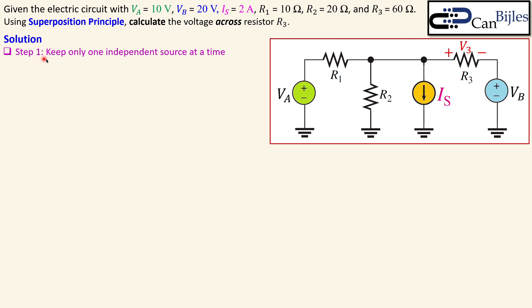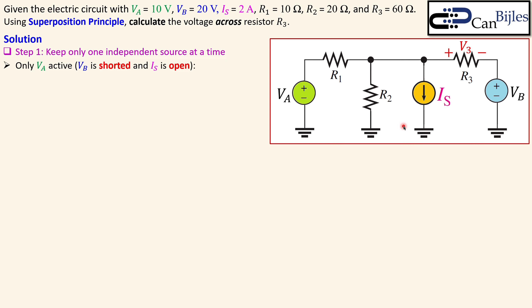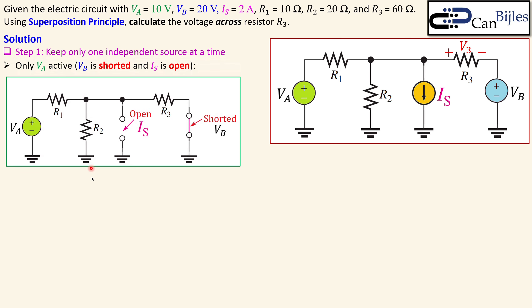Step one is always: keep one independent source active at a time. We have three sources, so we activate only one at a time and disable the rest. Starting with Va only active: all DC current sources must be open and all other DC voltage sources must be shorted. So Vb is shorted and Is is open, giving us a simplified circuit with Va still in place.